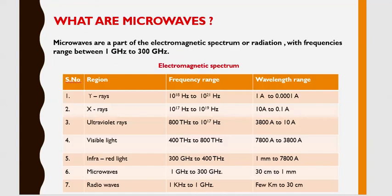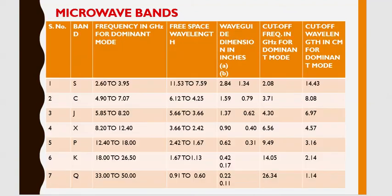Now let us start with the introduction of Microwaves. What are Microwaves? As the name suggests, the wavelength of these waves is relatively small as compared to radio waves, because microwaves are a part of the radio wave spectrum. Basically, microwaves are a part of the electromagnetic spectrum of radiation with frequencies ranging between 1 gigahertz up to 300 gigahertz.